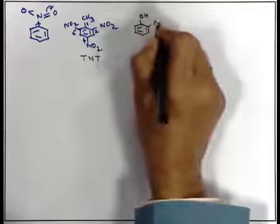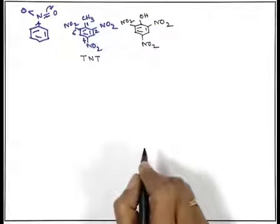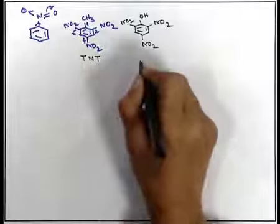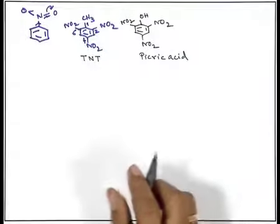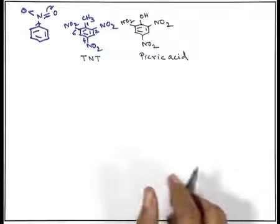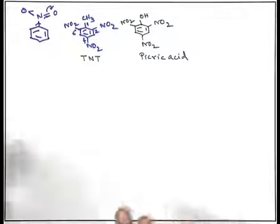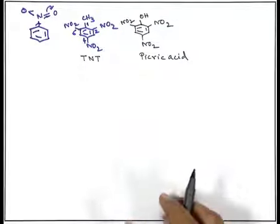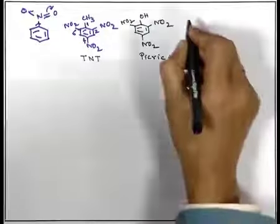When phenol is nitrated with sufficient nitric acid, it produces 2,4,6-trinitrophenol, called picric acid. Picric acid is a very interesting compound — when reacted with an aromatic compound, it forms a charge transfer complex. Where, say, phenanthrene or naphthalene is the electron donor, and picric acid is the acceptor, a nicely colored charge transfer complex is formed. These charge transfer complexes are used for the detection of polycyclic aromatic hydrocarbons (PAH).